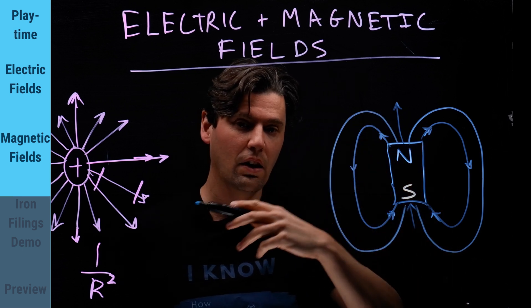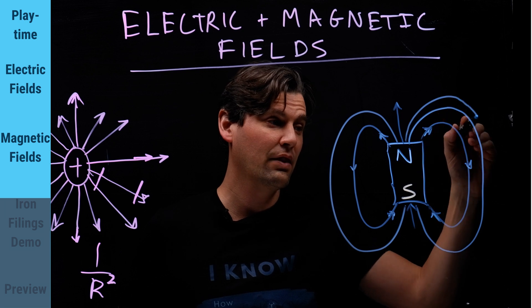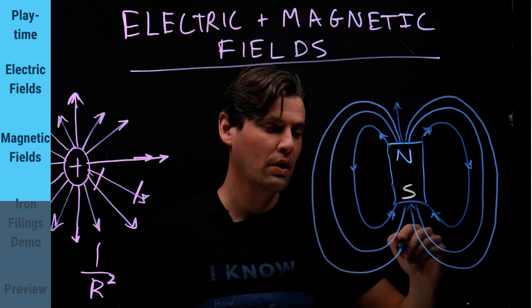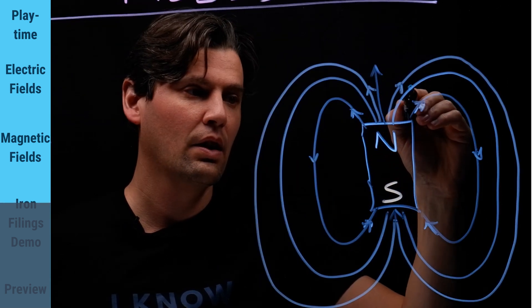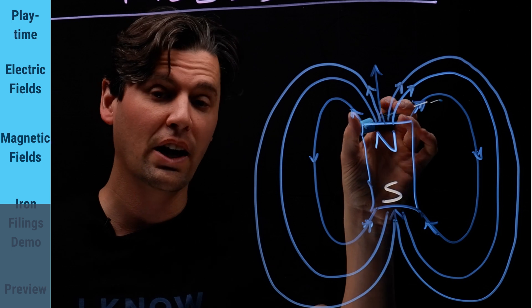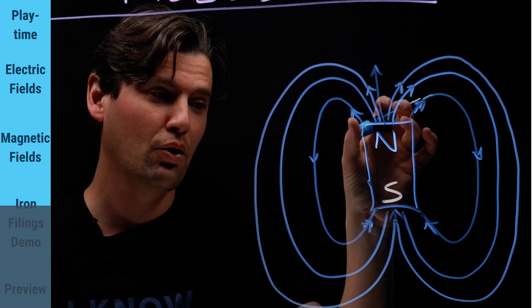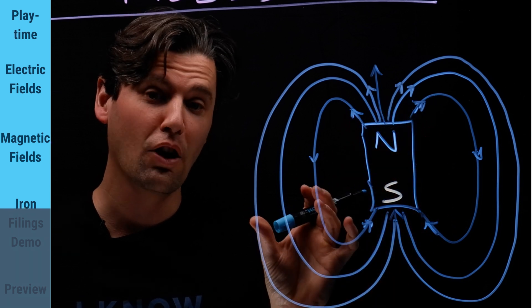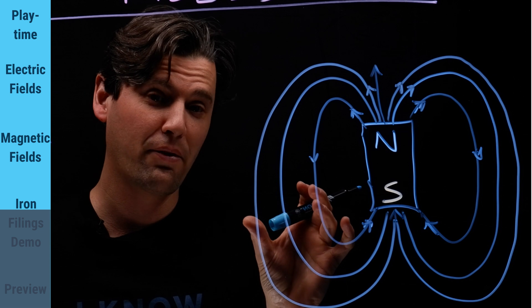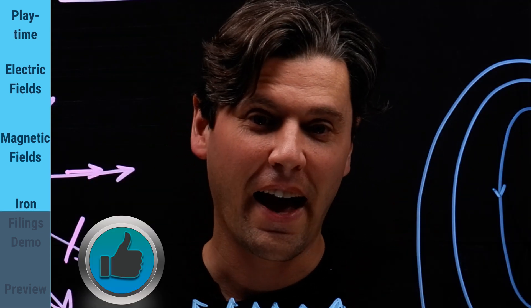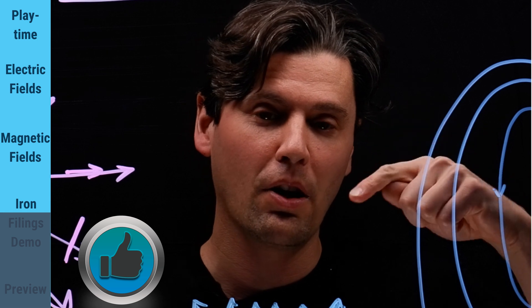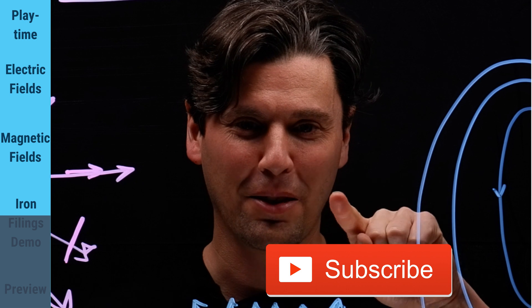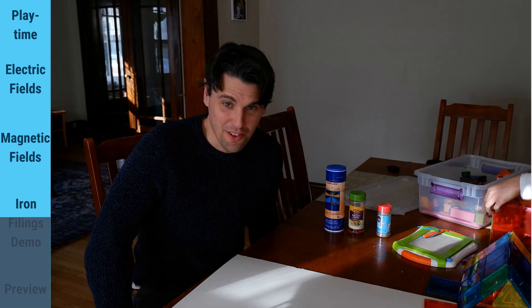Just like in the case of the electrostatics, the density of these lines is indicating how strong the magnetic force is. Very close to the north and south pole is where there's a much higher density. Give us a like and hit subscribe down below and click on that little bell icon.